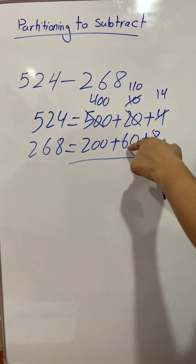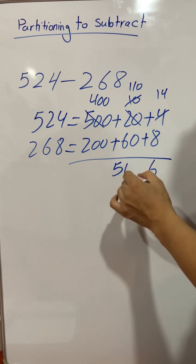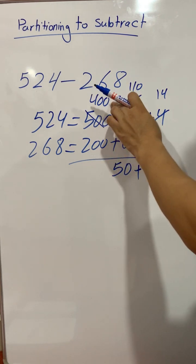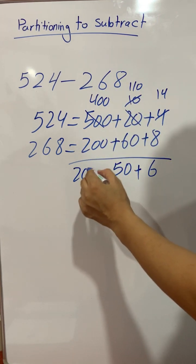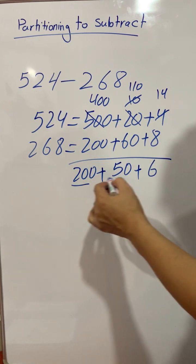110 minus 60 is equal to 50 and 400 minus 200 is equal to 200. Now 200 plus 50 plus 6 is equal to 256.